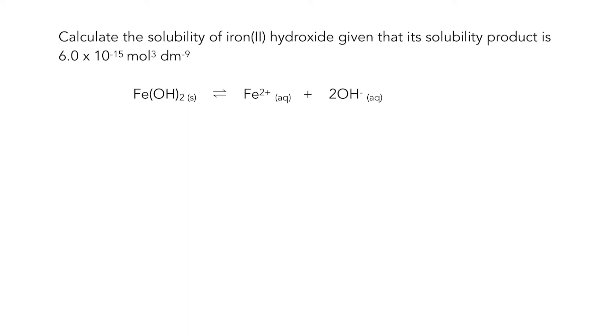We're given the solubility product, so that's 6.0 times 10 to the minus 15. Where do we start? Always with the balanced equation, because this is going to give us the ratios of solubilities that we're going to need. Our equilibrium concentration in mole per decimeter cubed is what we're trying to find out.